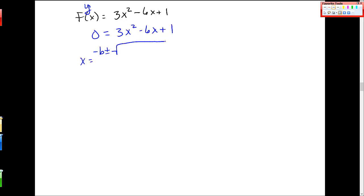x is equal to negative b plus or minus the square root of b² - 4ac over 2a. It's been a long summer. I almost said that wrong. And we remember that ax² + bx + c. And so this is my a is 3, b is -6, and c is 1. So I'm going to plug those in.